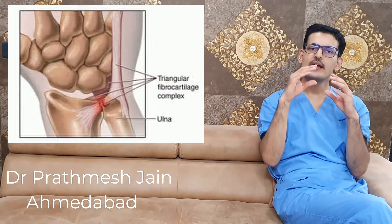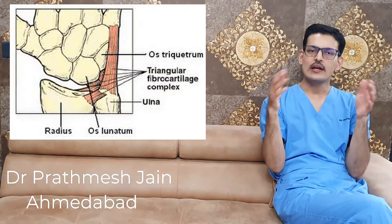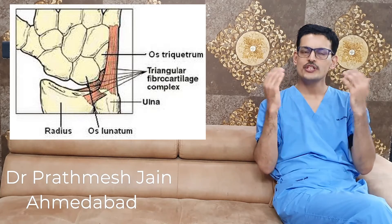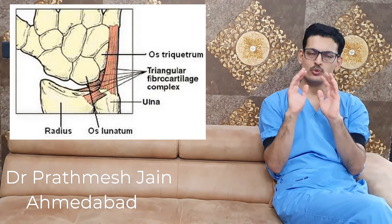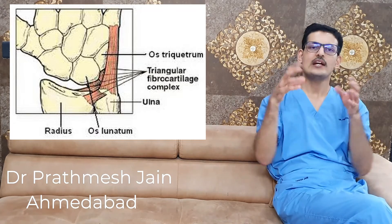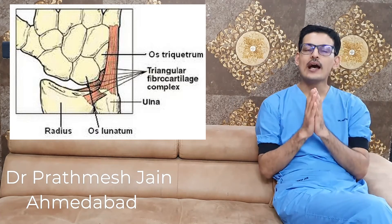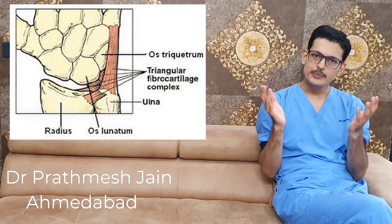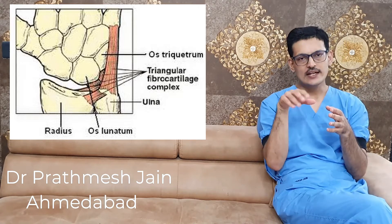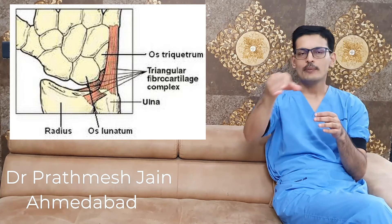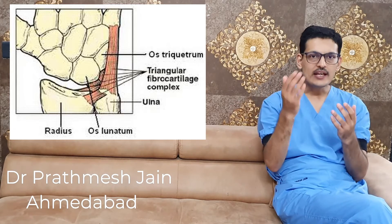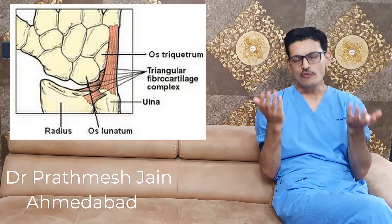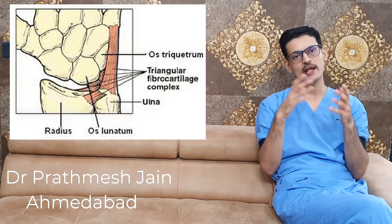The TFCC is avascular in the middle and vascular in the surrounding periphery. Tears on the periphery are vascular and have healing potential, whereas tears in the center of the disc are not vascular and have less healing potential. Generally, central tears are debrided, peripheral tears are repaired, and foveal tears are reattached to the fovea — this is called a foveal repair, done either with a suture anchor or trans-osseous sutures.